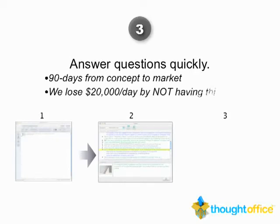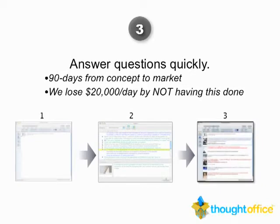So you come up with an idea or concept, you've already asked the questions, and now you want to answer them — just fire those answers off. For example, what is the opportunity cost? Well, if we don't get to market within 90 days from concept to market, that might be an issue and we lose about twenty thousand dollars a day. Now we've asked these questions and answered them stream of consciousness, building up a brainstorming session in the ThoughtOffice interface, loaded with both questions and answers.